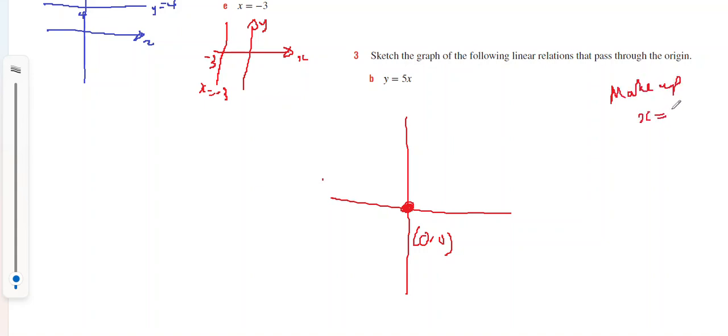I'm going to say when x equals 1, therefore y will equal 5. So 1 and 5, there is my second point. Then I can draw the line through of y equals 5x.